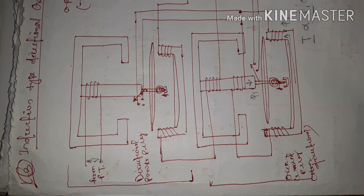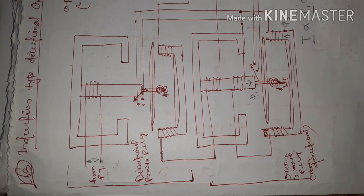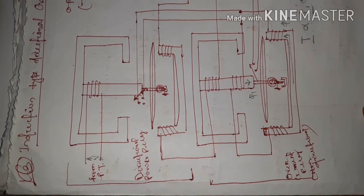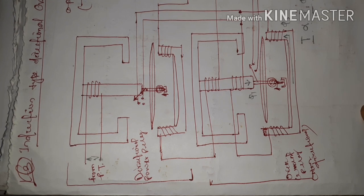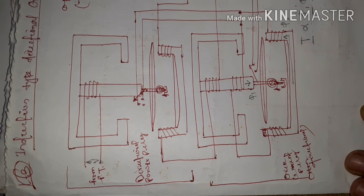Hello students, today I will discuss about induction type directional overcurrent relay. This type of relay is the combination of directional power relay and non-directional overcurrent relay. The function of non-directional overcurrent relay is that when the magnitude of fault current exceeds the predetermined value it is able to operate, whereas the function of directional power relay is that when the flow of electric current or power is in a specified direction.